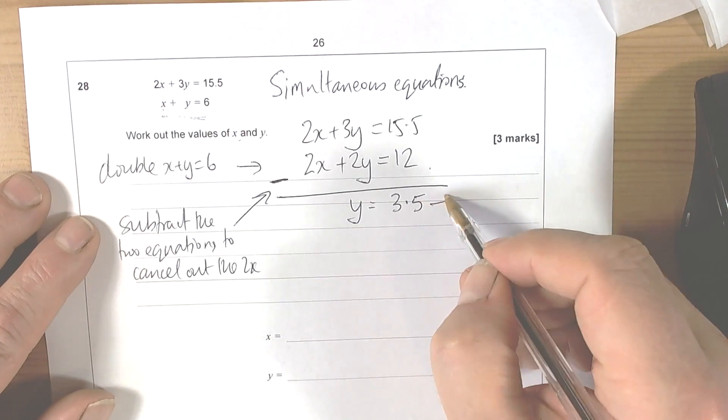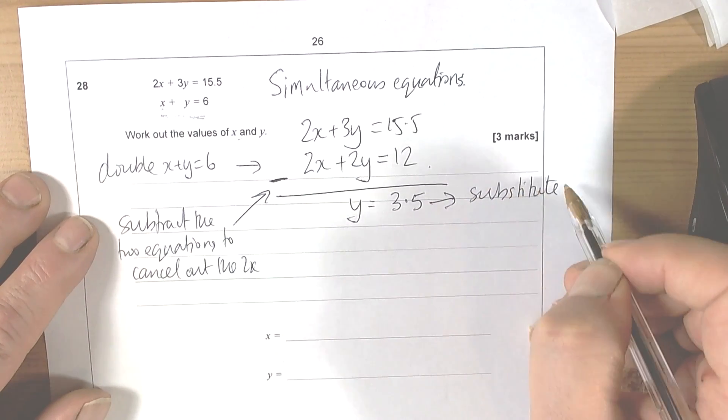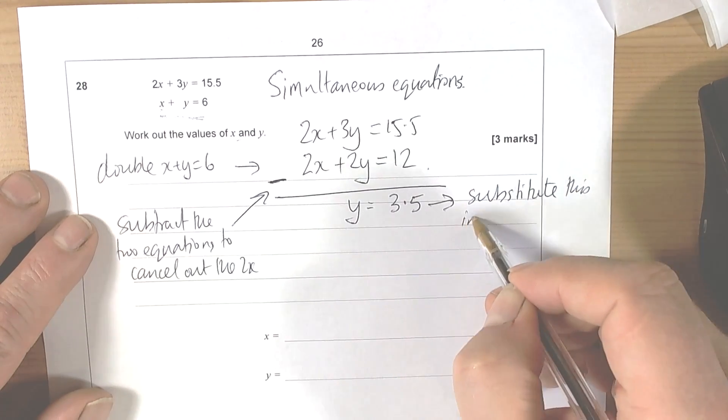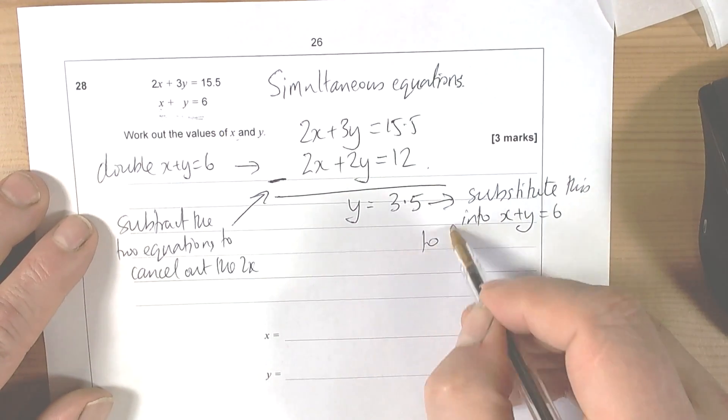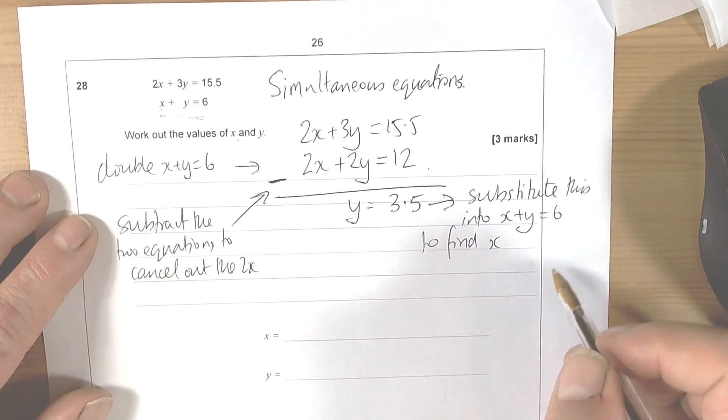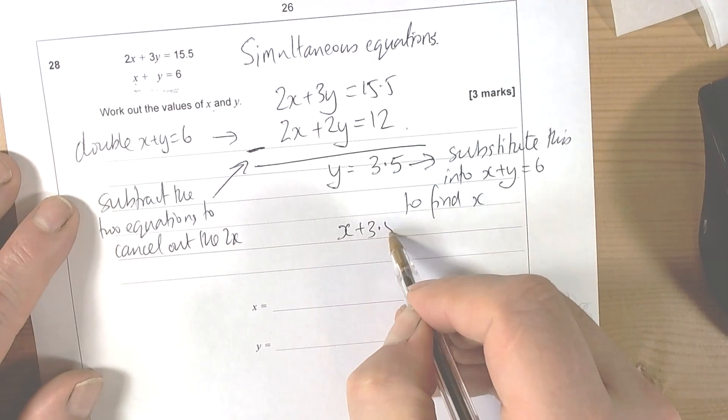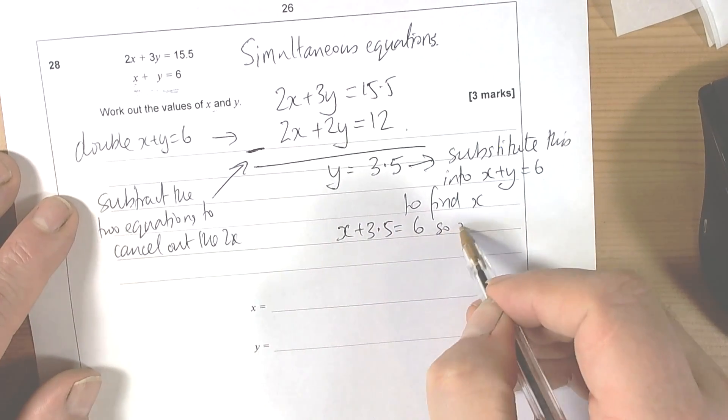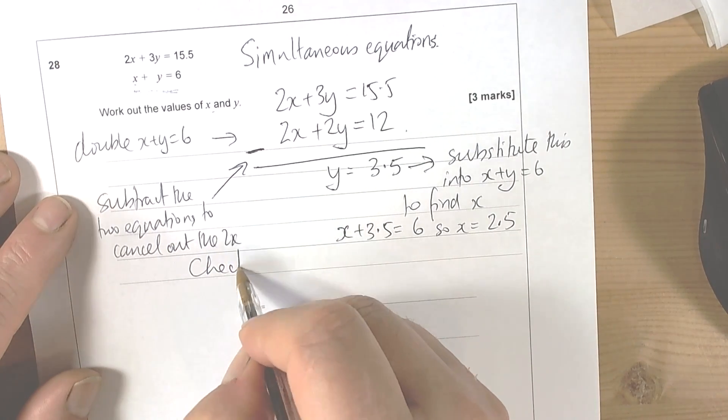Substitute this into x plus y equals 6 to find x. So we got x plus 3 and a half equals 6, so x equals 2.5. We then check.